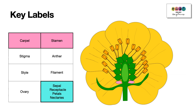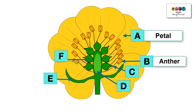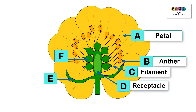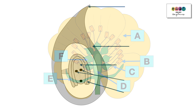So if you encountered something like this in your exam in June, could you label this particular flower? Well, A is pointing to the petal, B is to the anther of the stamen, C is to the filament of the stamen, D is the receptacle, E is a sepal, and F is pointing to a carpel — specifically the ovary of the carpel.